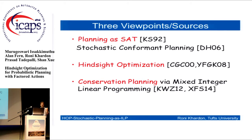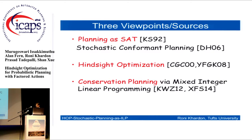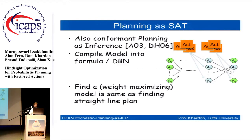To give perspective on our work, you can think of it as coming from three different lines of previous work — which is not exactly how this came about, but it's interesting to think about it this way. Those three lines are: planning as satisfiability, hindsight optimization, and conservation planning. I will review each briefly to give the right context.